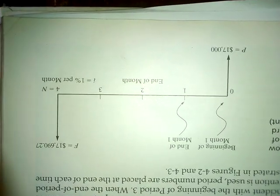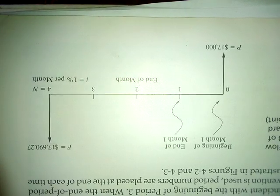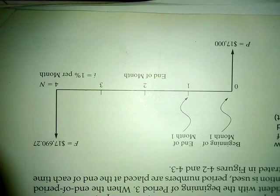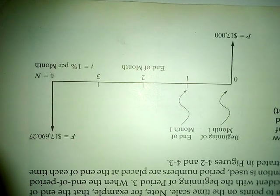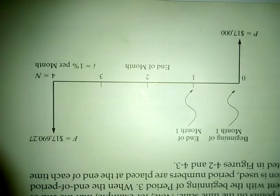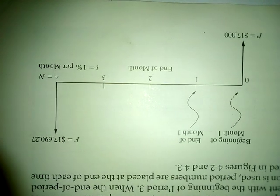In the diagram you see p, which is an investment of seventeen thousand dollars now, at a one percent interest rate for four years. After four years, we will receive seventeen thousand six hundred ninety dollars. Let me explain the notation in the figure: because we are investing seventeen thousand, we are spending money, so we plot it downward.